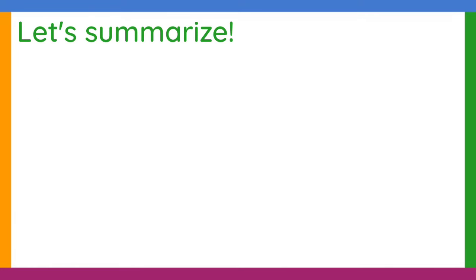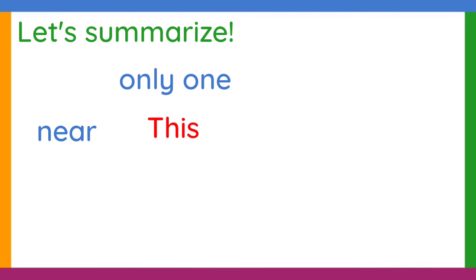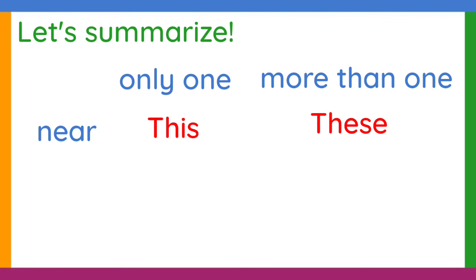Now, before having an activity, let us summarize the use of the demonstrative pronouns. If the person is referring or pointing to only one person or thing and it is near, we use this. If pointing to one person or thing that is far, we use that. But if there is more than one and they are far from the person, we use those.